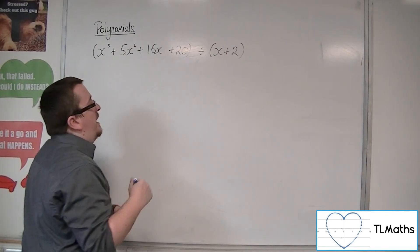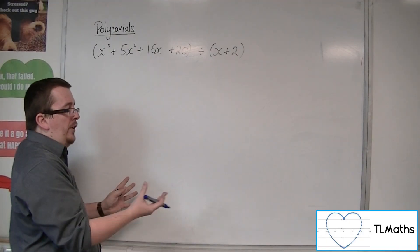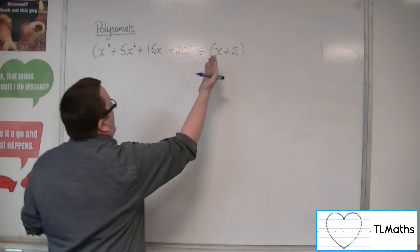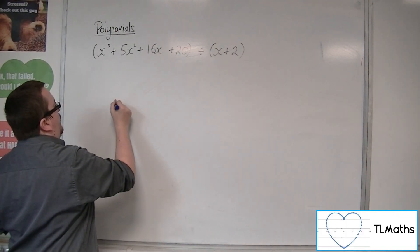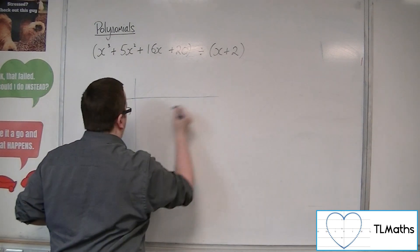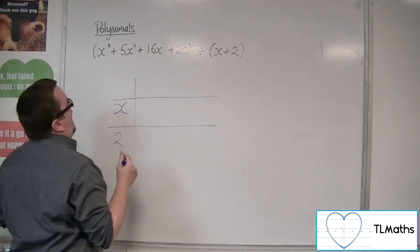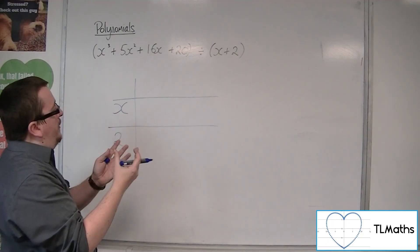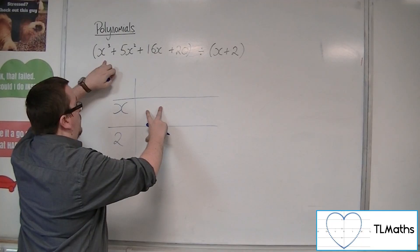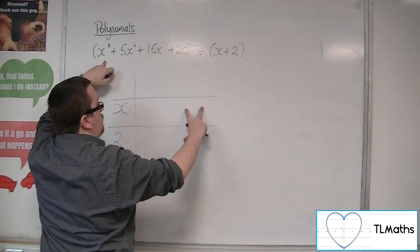What we do is we're going to put, it's kind of like doing a reverse multiplication grid. So, the x plus 2 goes down the left-hand side. And what we want is going inside the grid.